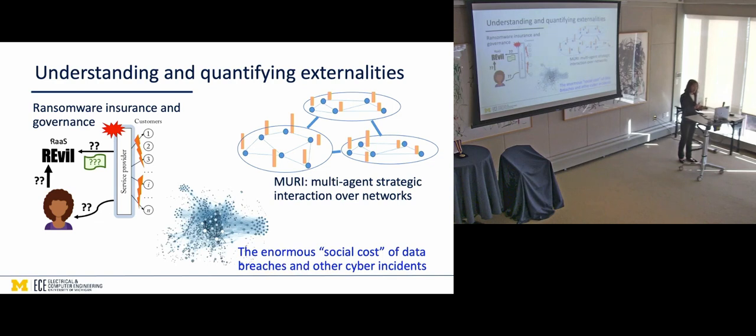And another area we're working in, this is a MURI project that Mike and I have with other colleagues on multi-agent strategic interaction over network. So this is now looking at a much larger ecosystem, not just two-party interaction, but many agents interacting over network, not just network, but networks with group structures, groups and groups of groups. And how do we understand, and analyze their strategic interactions with various types of externalities?